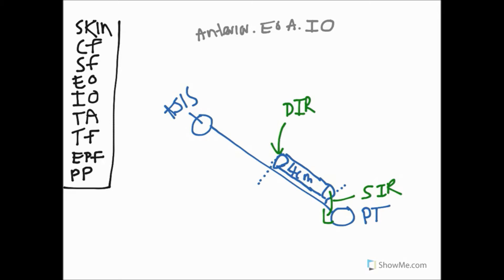The posterior wall of the inguinal canal is formed along its entire length by the transversalis fascia. The roof, or superior wall, of the inguinal canal is formed by the arching fibers of transversus abdominis and the internal oblique muscles, which form the conjoined tendon down towards the pubic tubercle.